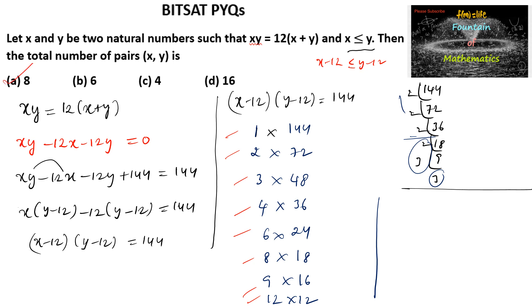For example, when x minus 12 equals 1, x equals 13 and y equals 156. So (13, 156) is one pair. When x minus 12 equals 2, x equals 14 and y equals 84. So (14, 84) is another pair. Similarly, you will get 8 ordered pairs.